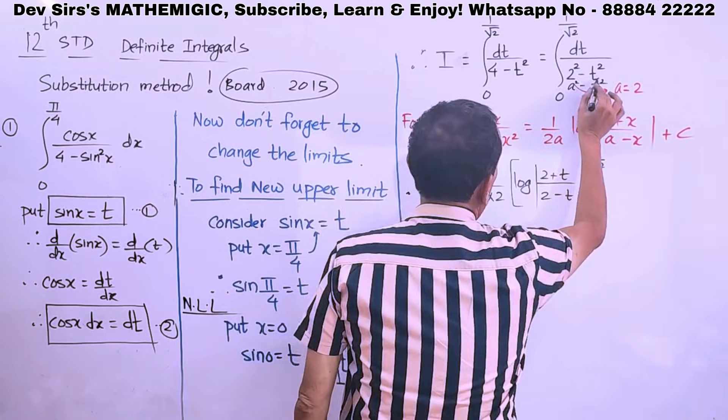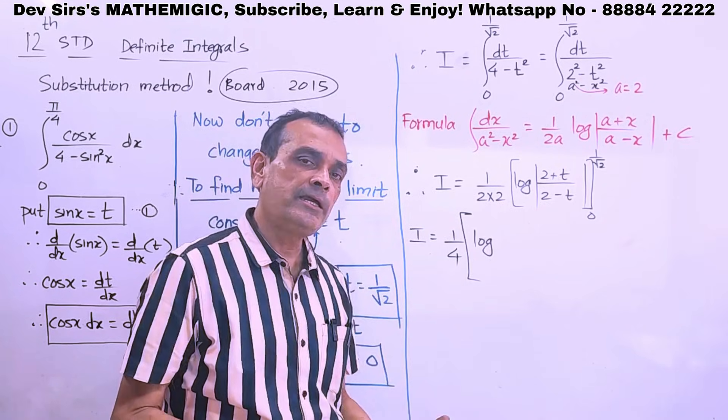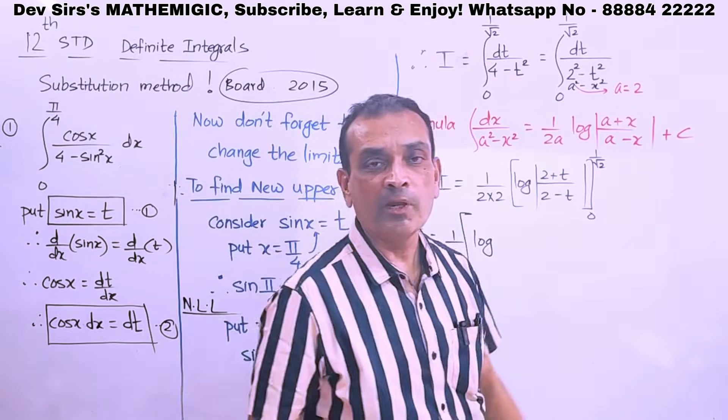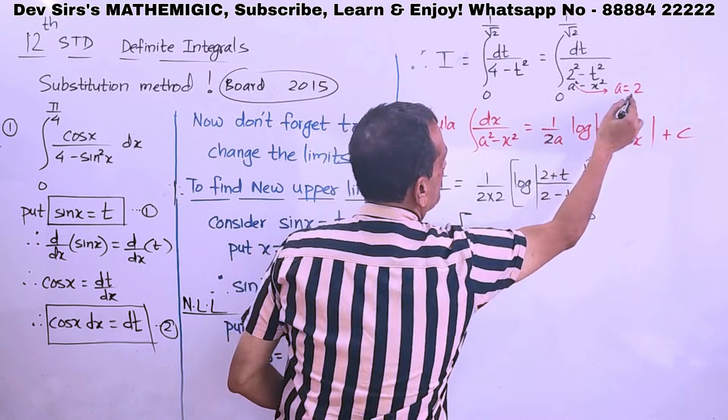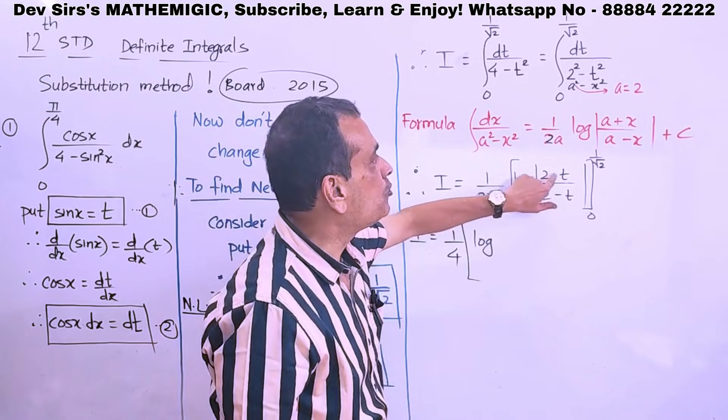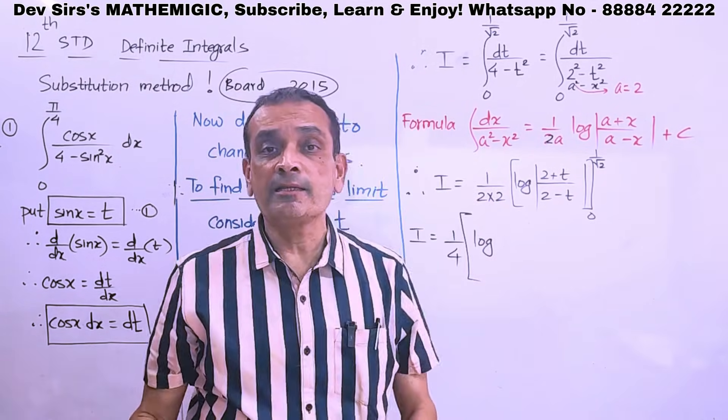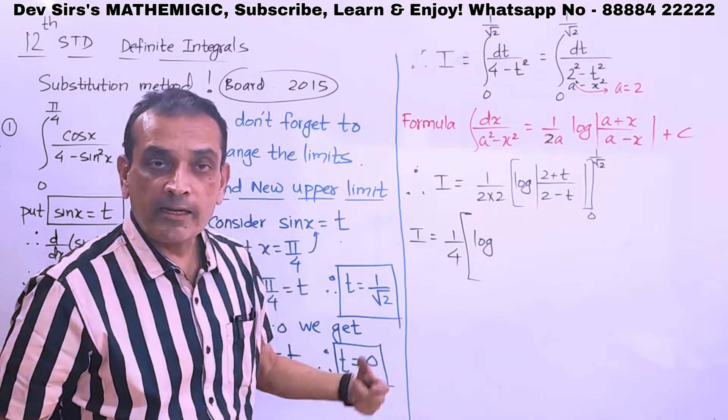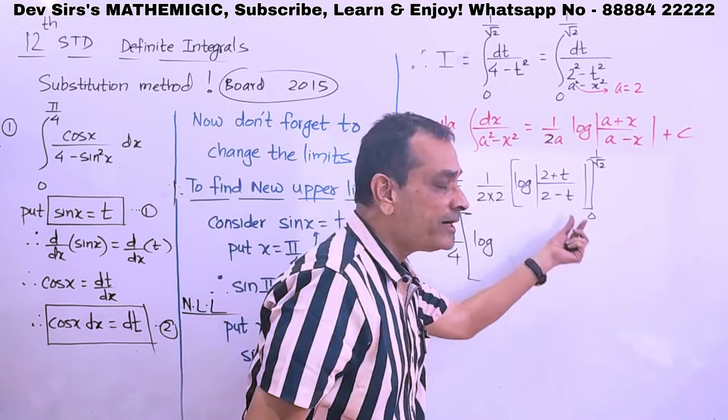And, instead of x we have t over here. X's place has another variable t. Because after substitution, dx has got changed to dt. x has got changed to t. So, keeping in mind this same formula, what do we get? 1 upon 2a. A means 2. So, 1 upon 2 into 2. Log. a plus x means 2 plus t upon 2 minus t. And, after getting the answer, we don't write plus c. This is definite integration. We just write lower and upper limits with brackets. And, in this we do not resubstitute the value of t.